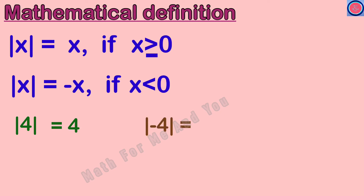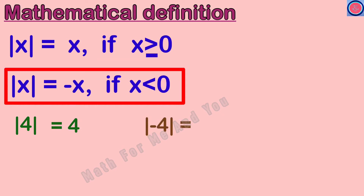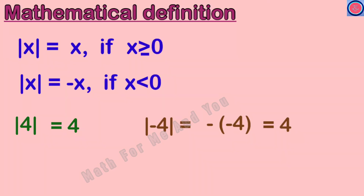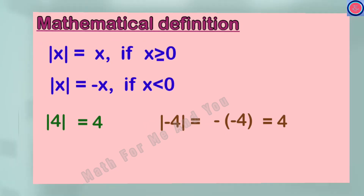What is absolute value of minus 4? Negative 4 is less than 0, so we take the negative of this number. Negative of negative 4 is equal to positive 4. That means absolute value of 4 and absolute value of minus 4 are both equal to 4. So we understand that the absolute value or modulus of a number is the positive value of the number.